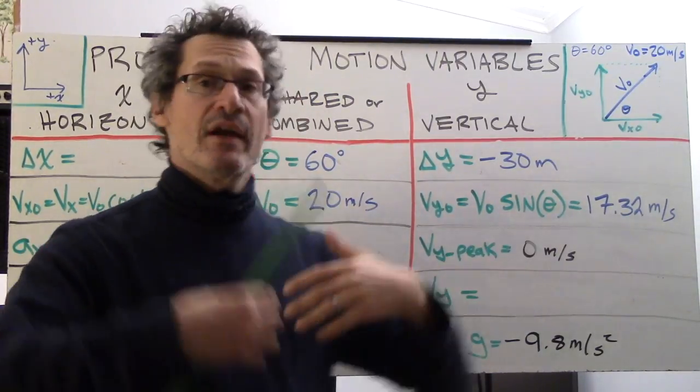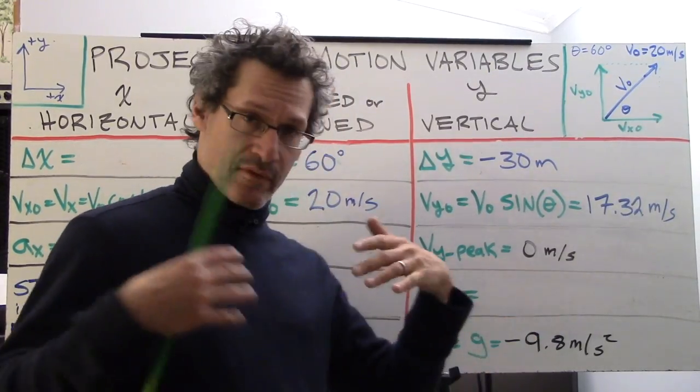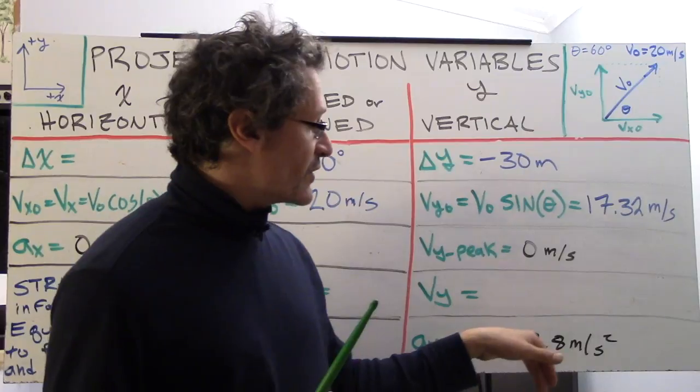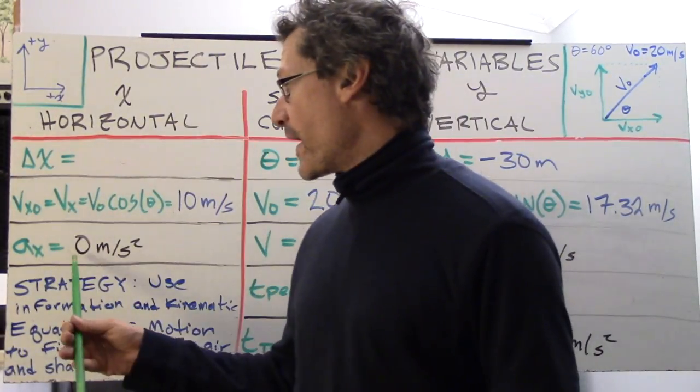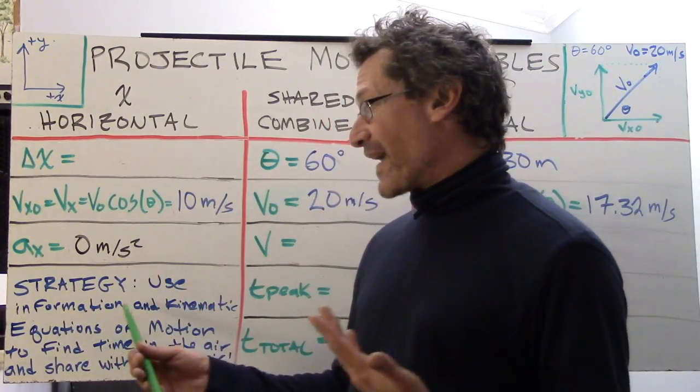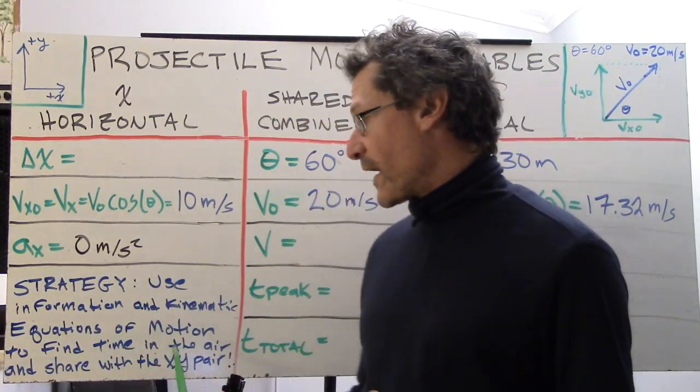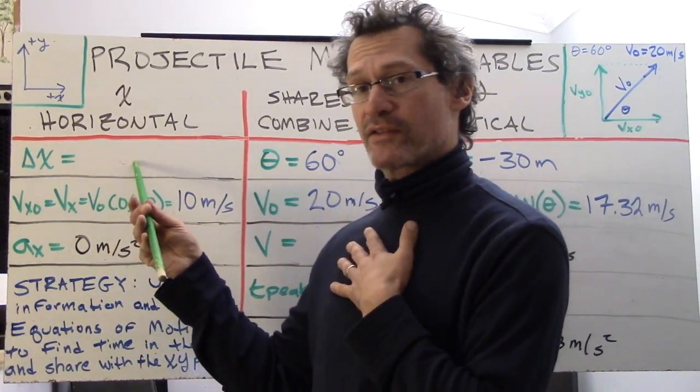Other values are still the same. We've got v y peak always zero meters per second, a y which is the acceleration due to gravity, always negative 9.8 meters per second squared, and a x is zero meters per second squared. What we're going to do is use this strategy: try to find time, and by finding time we can share it with the delta x side and find delta x. That's our ultimate goal.